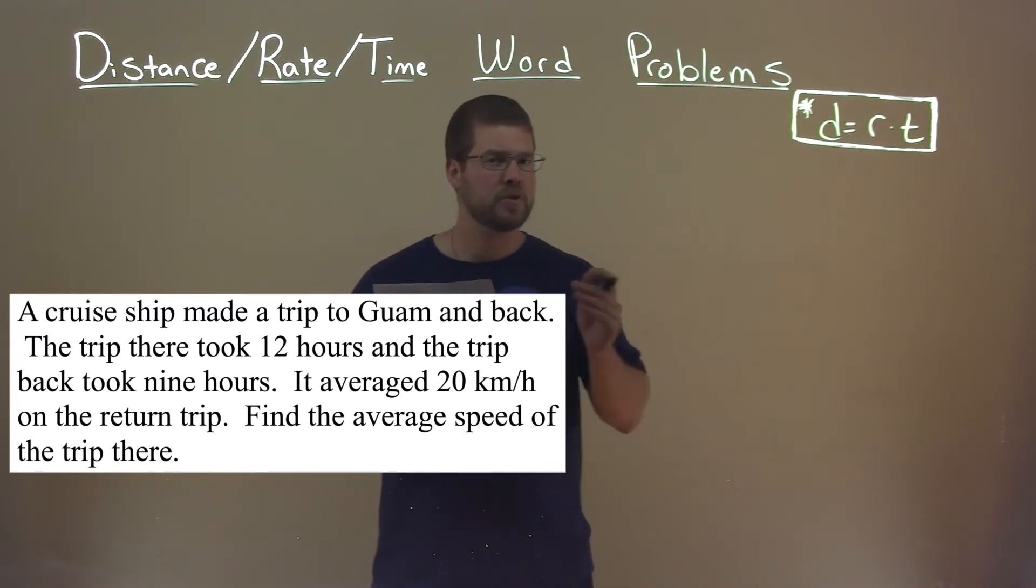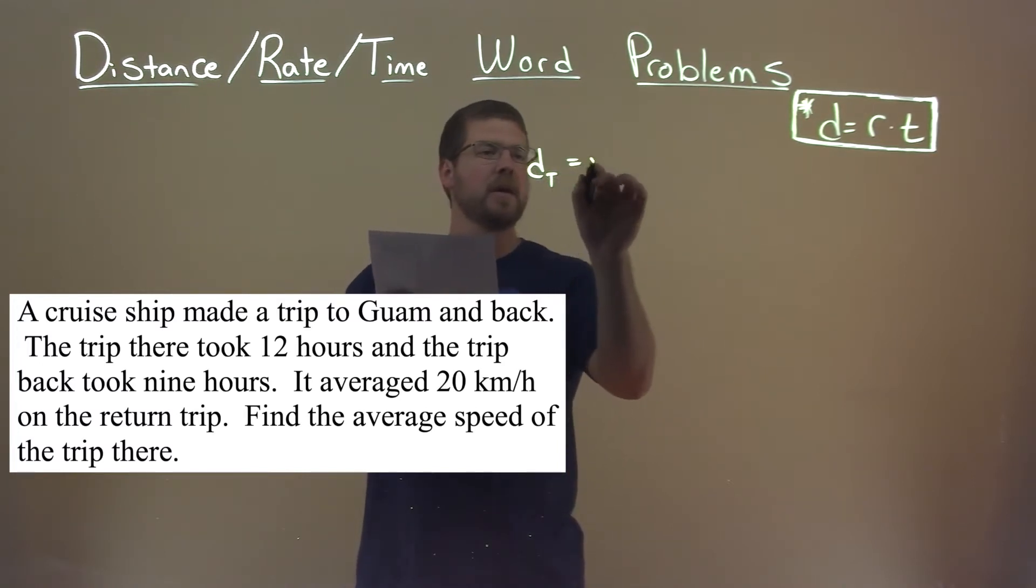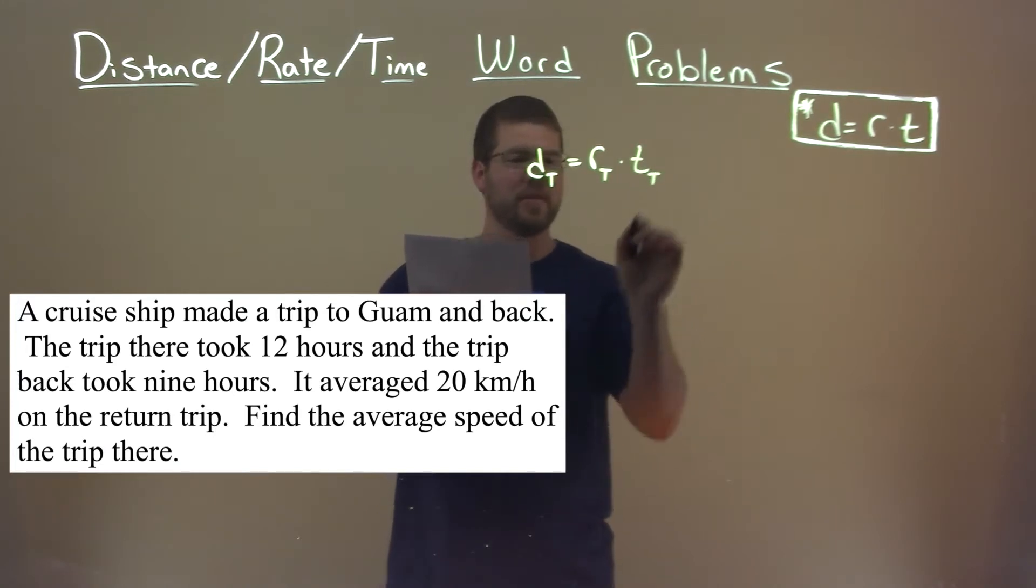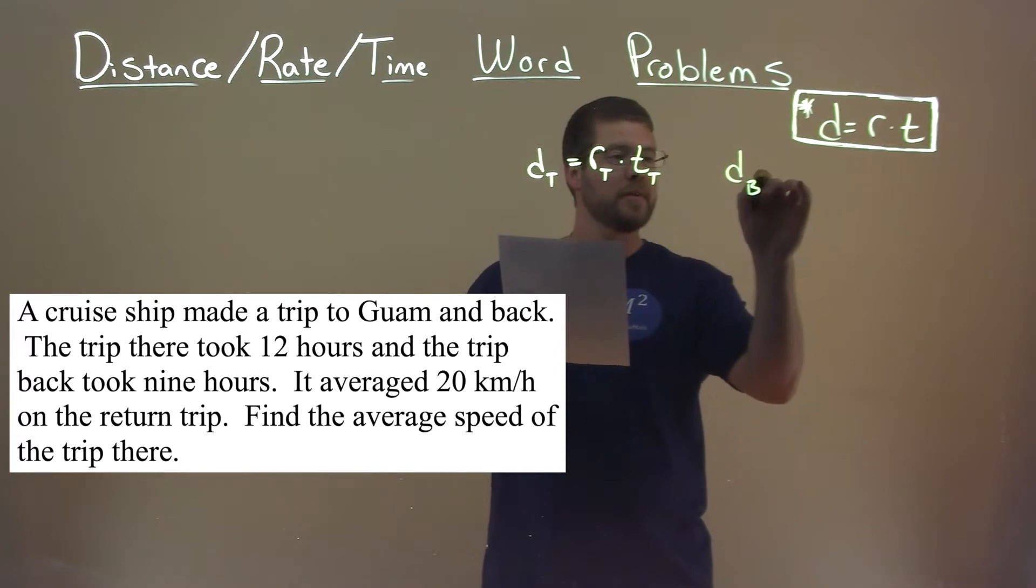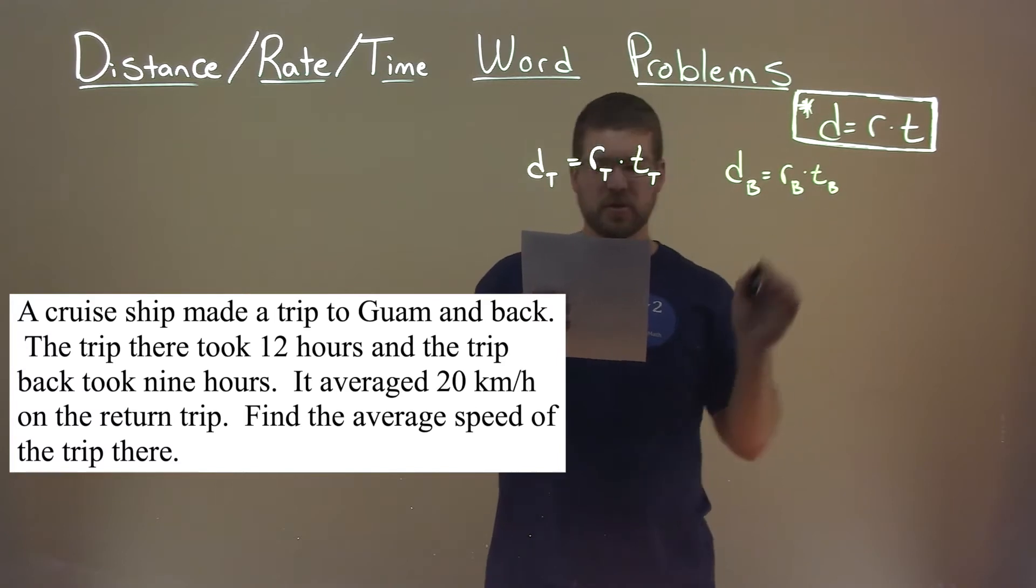So we have our cruise ship, and we're going to break this down to the trip there and the trip back. Distance equals rate times time. We'll separate the distance of going there, call it d_t, is the rate r_t times time t_t. And then back is distance of the back journey d_b equals the rate of the back journey times the time of the back journey.